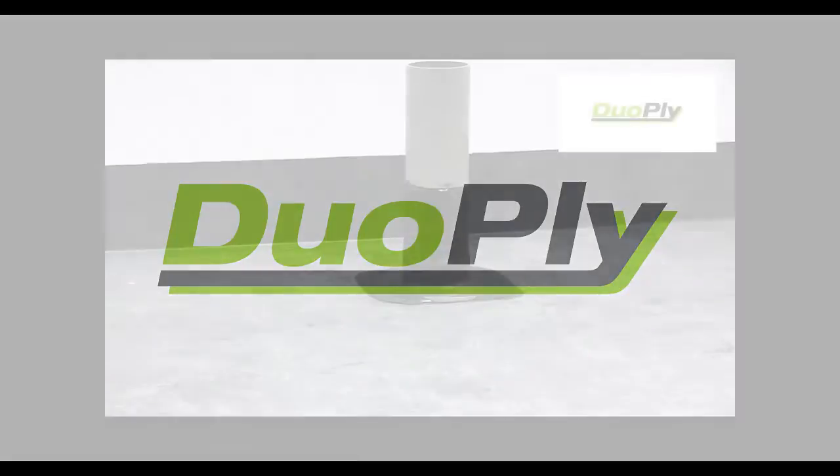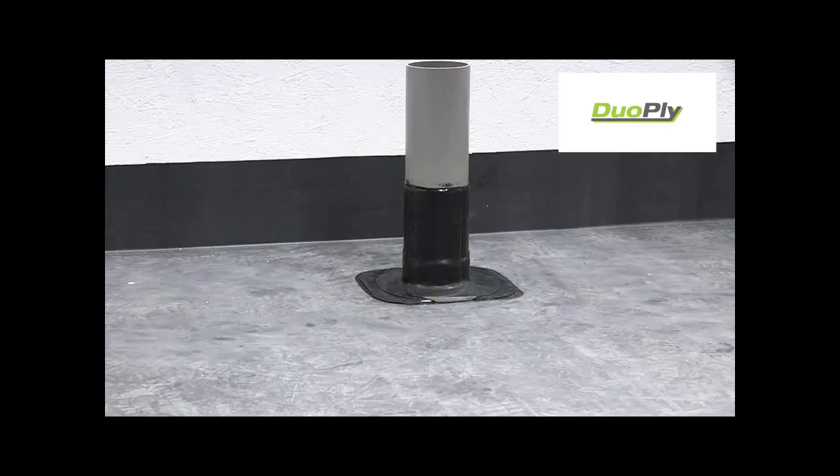Pipes and many other rooftop penetrations can be sealed using 228mm pressure sensitive uncured flashing tape. The pipe wrap is done in three parts.